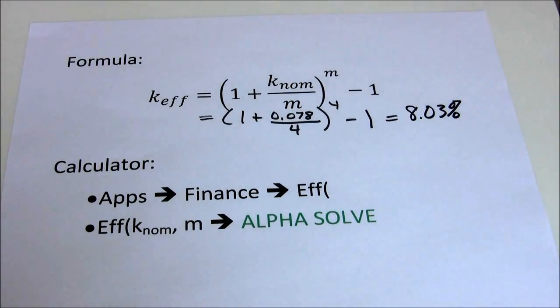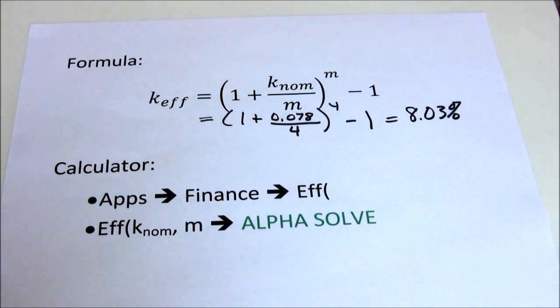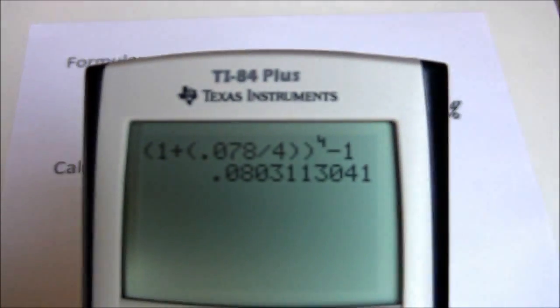And I do that and I get 0.0803. What that means is 8.03%. So let me just go ahead and write that down. 7.8% compounded quarterly is 8.03% compounded annually. Same thing. Now I can also do that with my financial calculator.